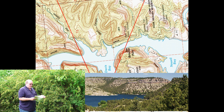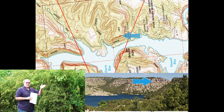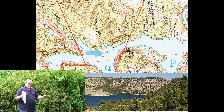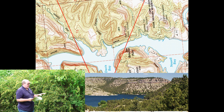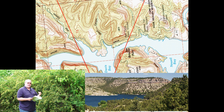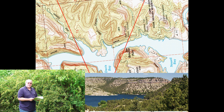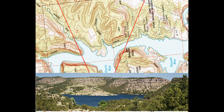The closer the lines are together, the steeper the landscape is. The farther apart they get, the flatter the ground is. Very simple concept to understand. What I'm going to do is combine the topographical map, which will take up the top two-thirds of the image, with the actual photograph of the landscape at the bottom third. Hopefully this explanation will help you understand how to read contour lines.